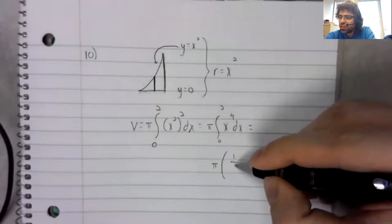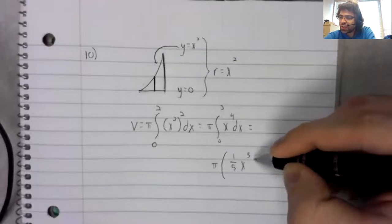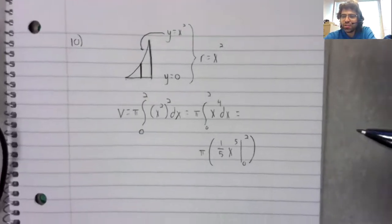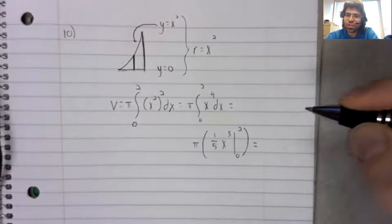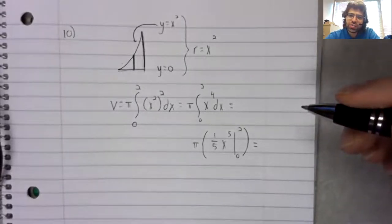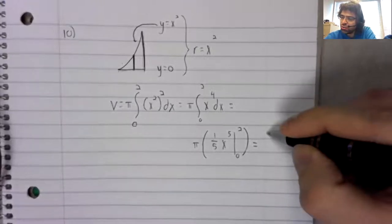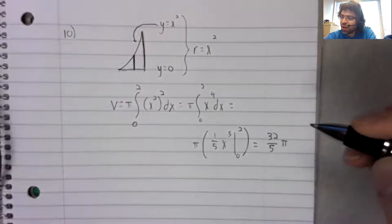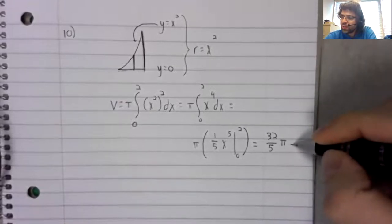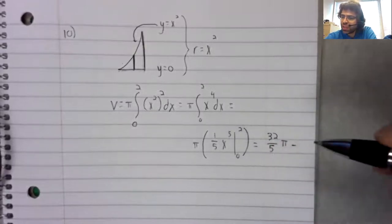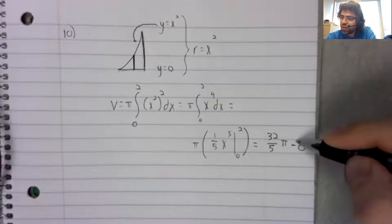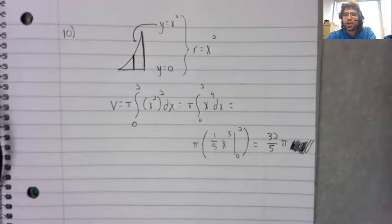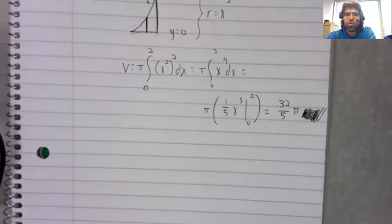The antiderivative is 1 5th x to the 5th. We plug in 0 and 2. Let's see. 2, 4, 8, 16, 32 5ths times pi. And when we plug in 0, we get 0, which we don't have to bother writing down. And there is our volume.